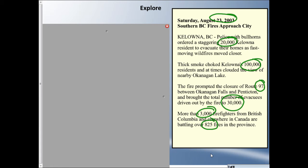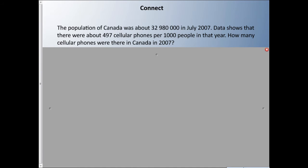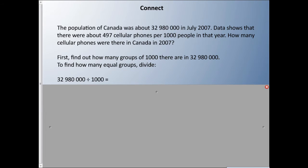Let's go through some examples. This problem has: the population of Canada was about 32,980,000 in July 2007. Data shows that there were about 497 cell phones per thousand people in that year. How many cell phones were there in Canada in 2007? We have a few numbers here and we'll need to do a couple steps to figure this out.